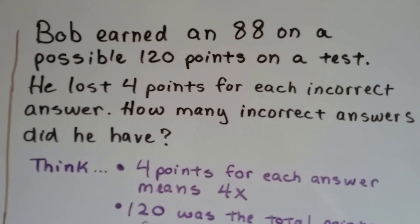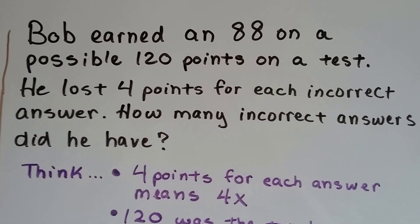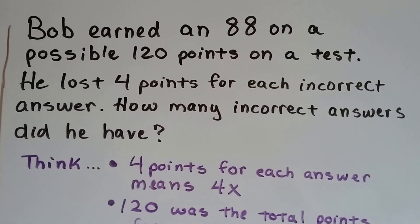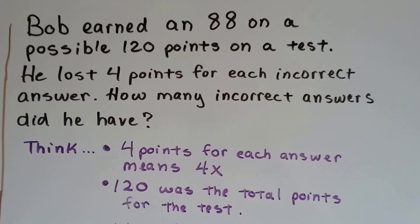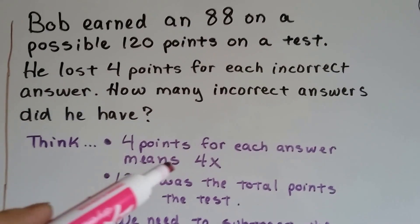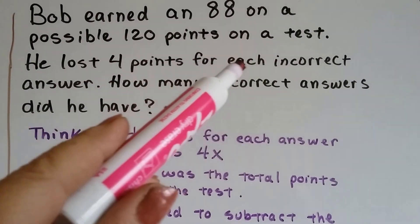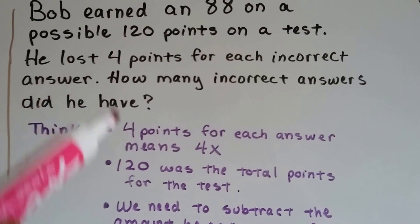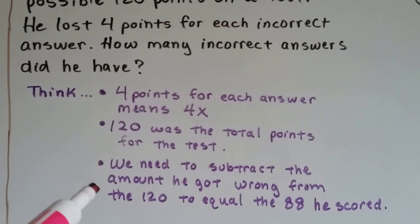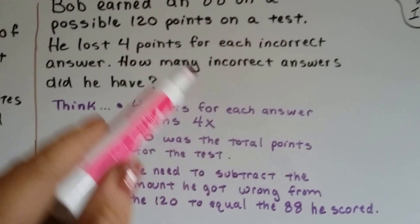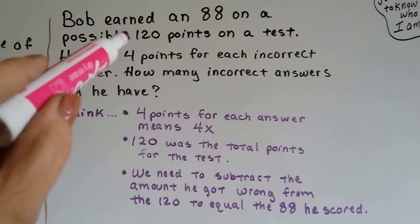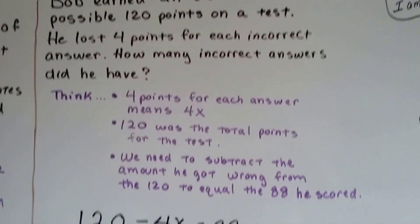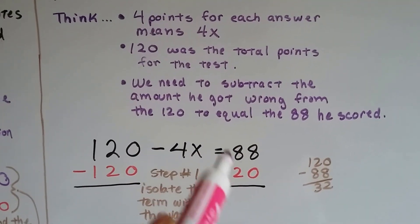Bob earned an 88 on a possible 120 points on a test. He lost four points for each incorrect answer. How many incorrect answers did he have? Four points for each answer means 4x. 120 was the total points. We subtract the amount he got wrong from 120 to equal the 88 he got. So our equation is 120 minus 4x equals 88.